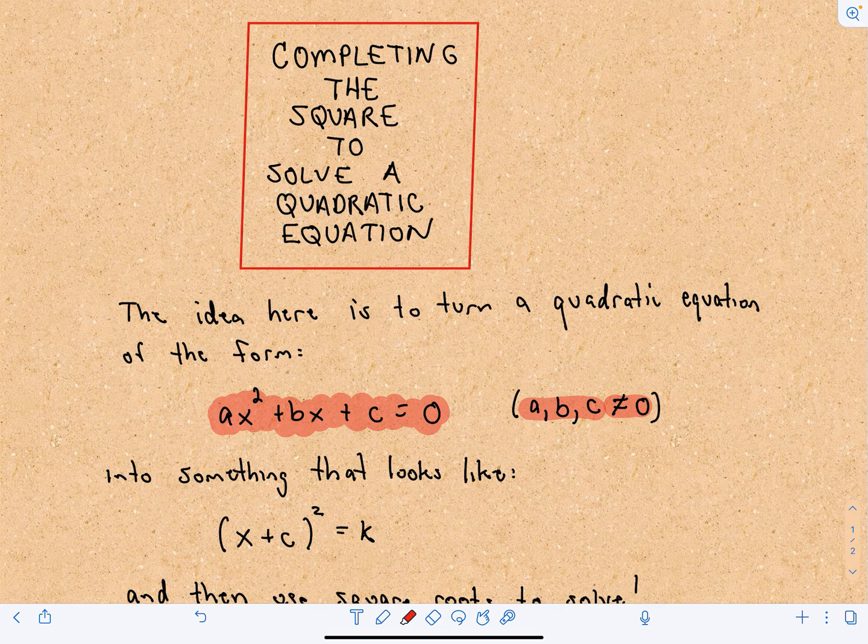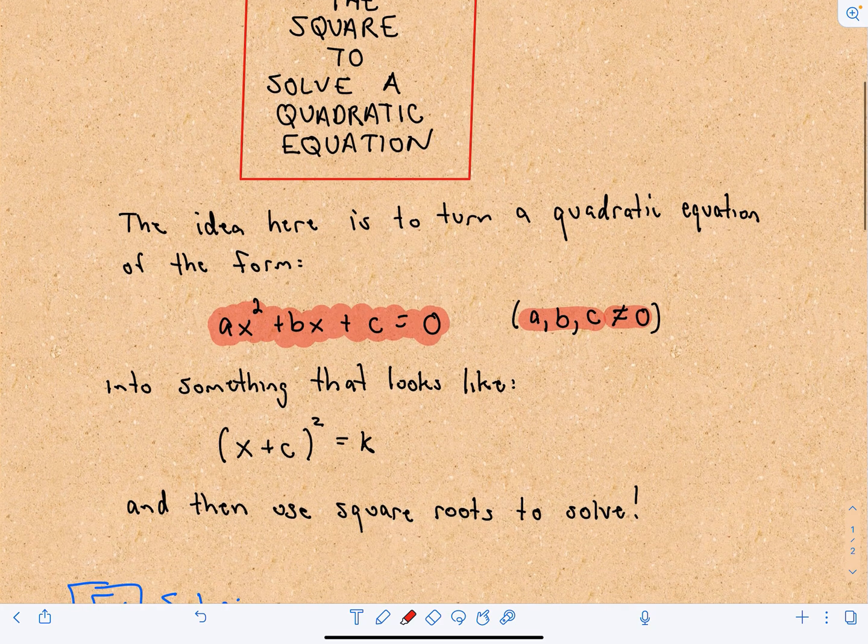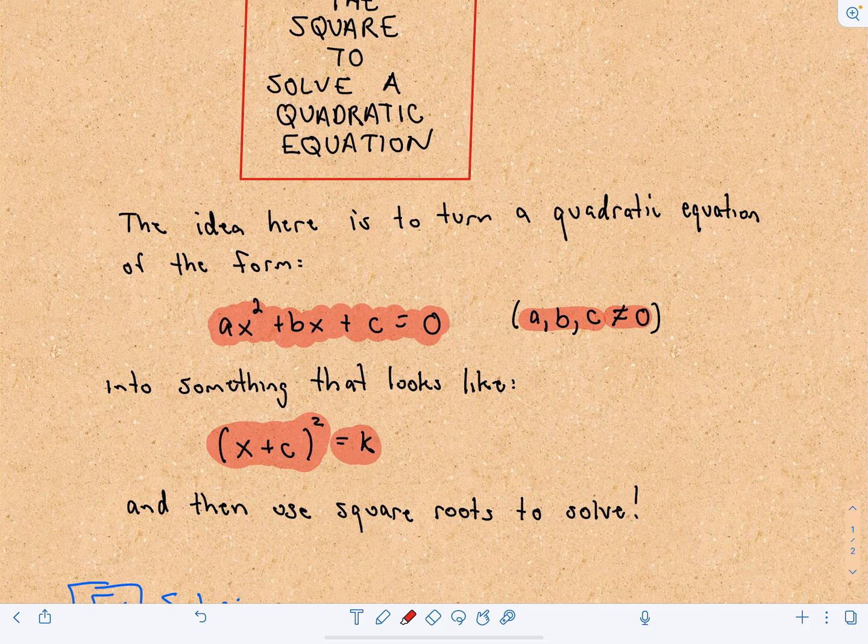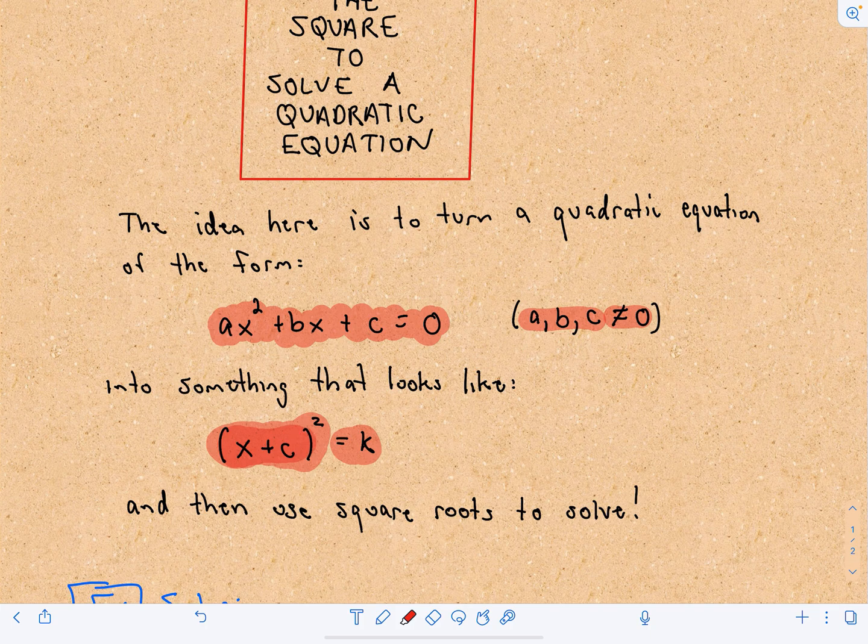We want to turn that quadratic equation ax² + bx + c = 0 into something that looks like (x + c)² = k. The idea is we want a perfect square on one side of the equation, and then we're going to use square roots to solve it.